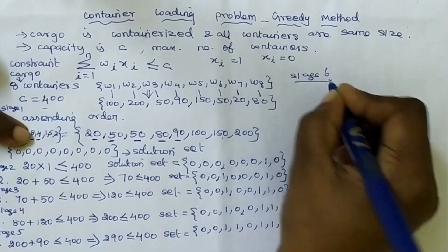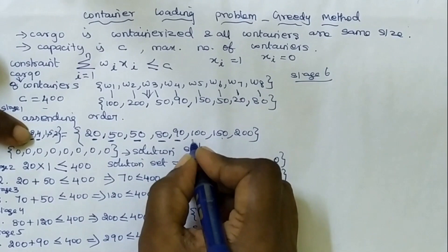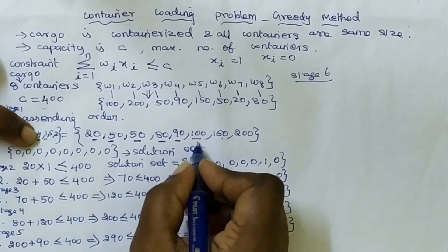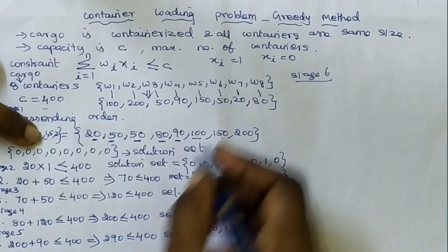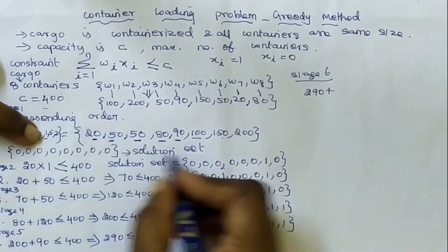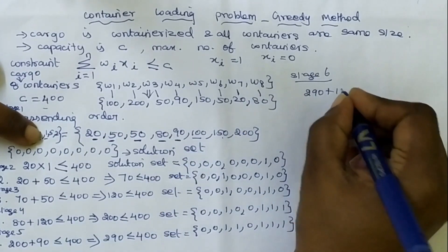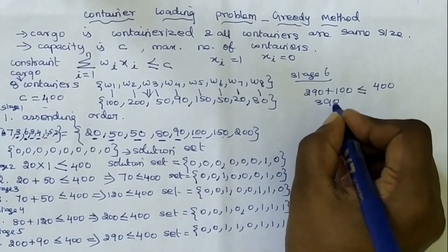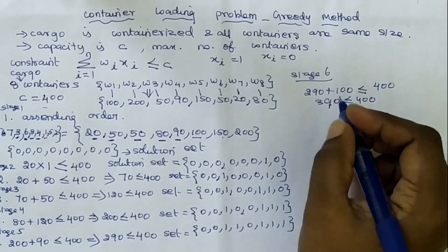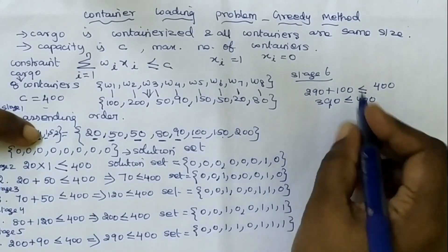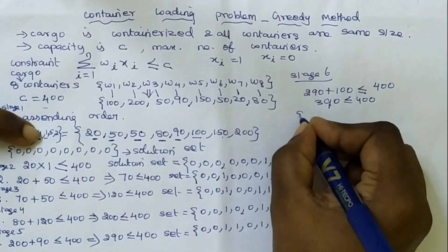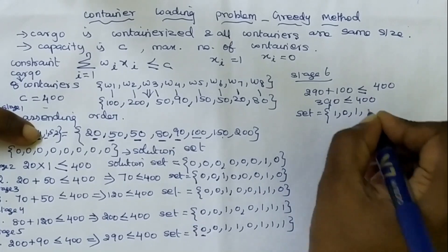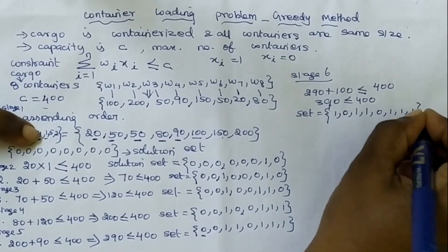In Stage 6, container 1 (weight 100) is loaded. The previous weight is 290; adding 100 gives 390 ≤ 400 — constraint satisfied. Container 1 is loaded into the cargo. The solution set becomes {1, 0, 1, 1, 0, 1, 1, 1}.